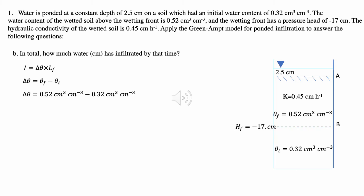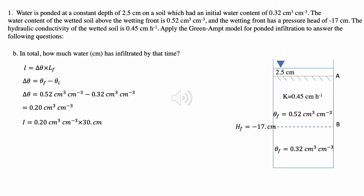The value of delta theta is calculated using delta theta equals final water content minus initial water content. Therefore, delta theta equals 0.52 cm³/cm³ minus 0.32 cm³/cm³, giving us a delta theta value of 0.20 cm³/cm³. Now plugging into the equation: I equals 0.20 cm³/cm³ times 30 centimeters. Accounting for two significant figures, we get 0.60 centimeters — that is how much water has infiltrated by the time the wetting front reaches 30 centimeters.